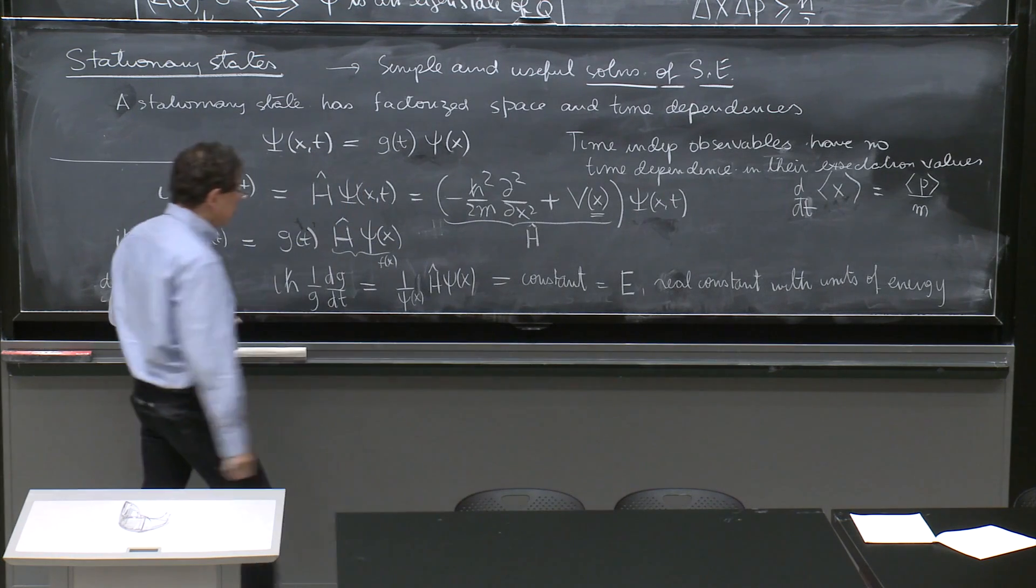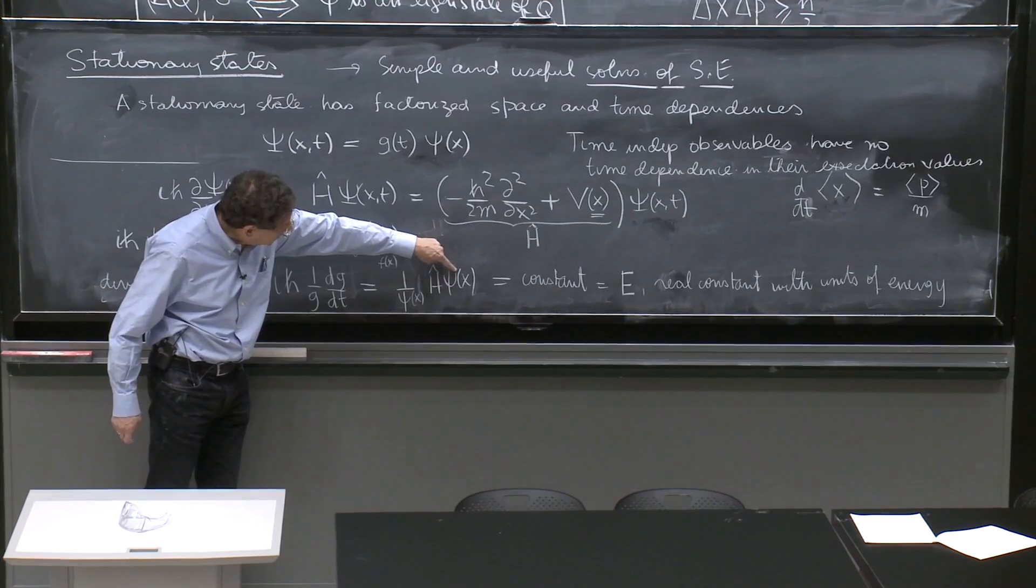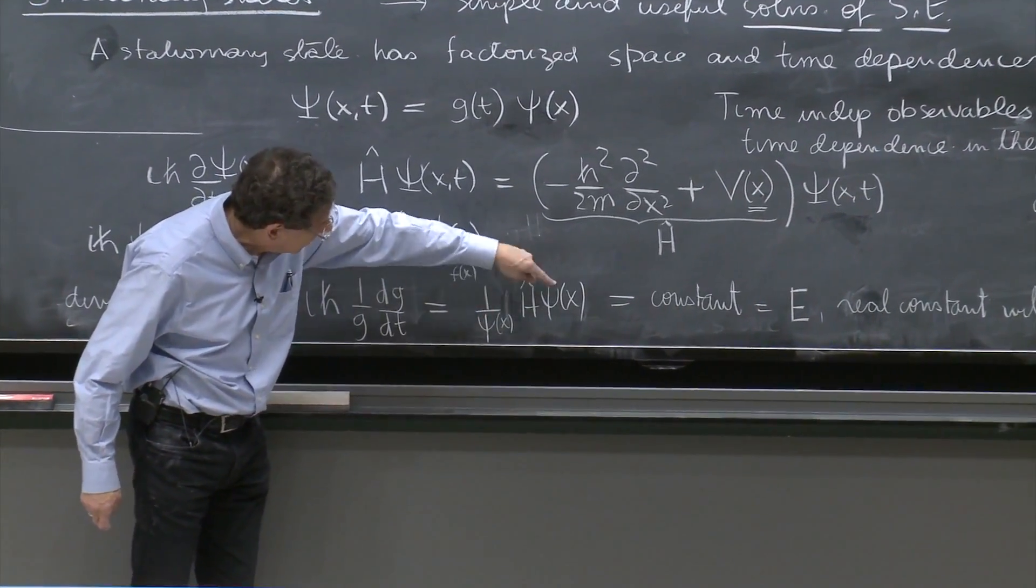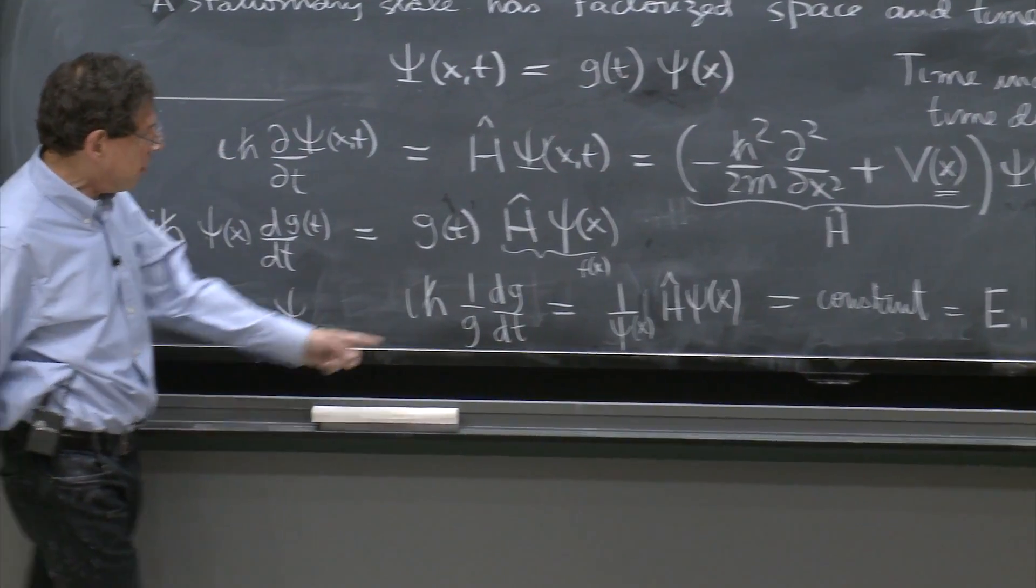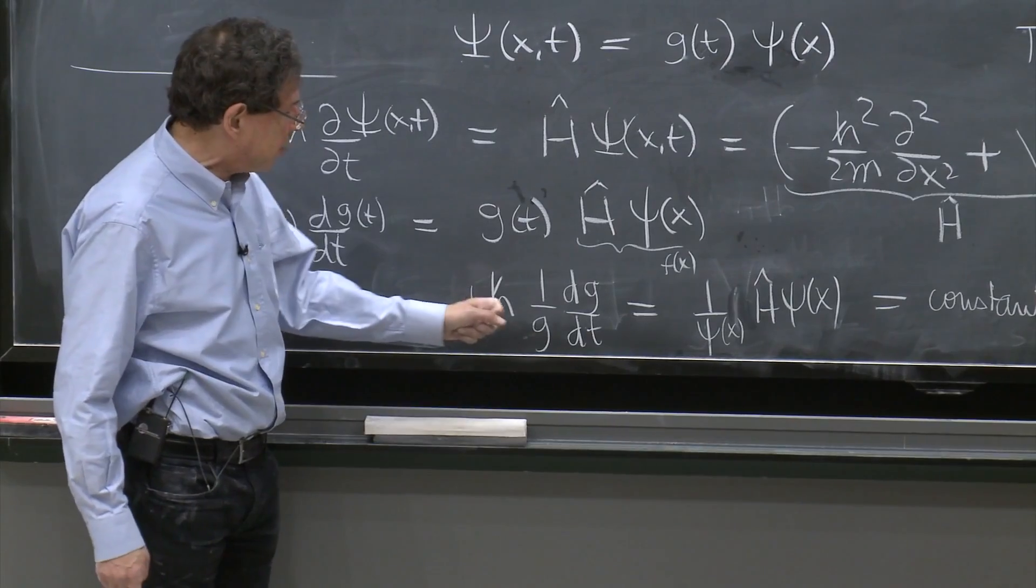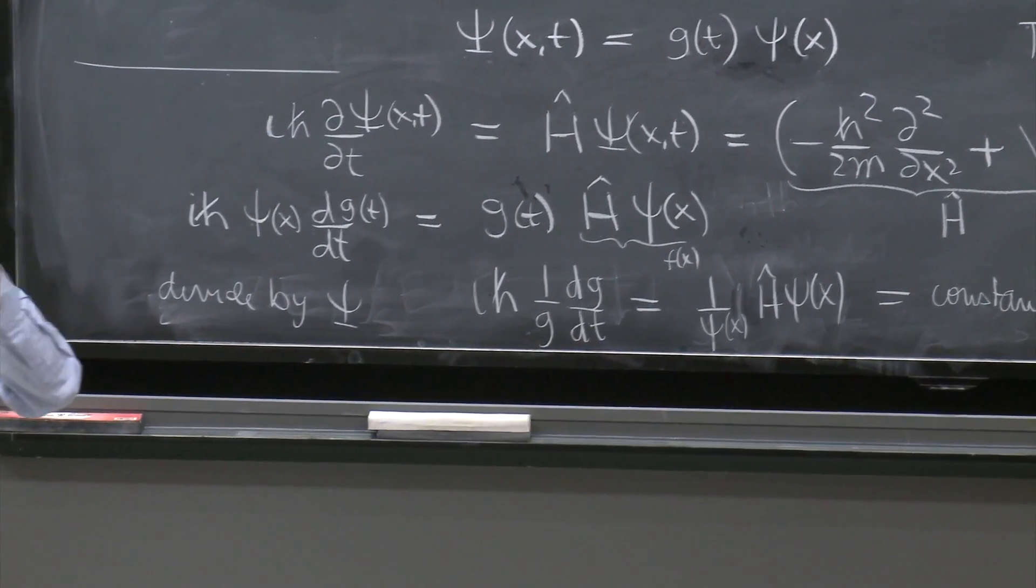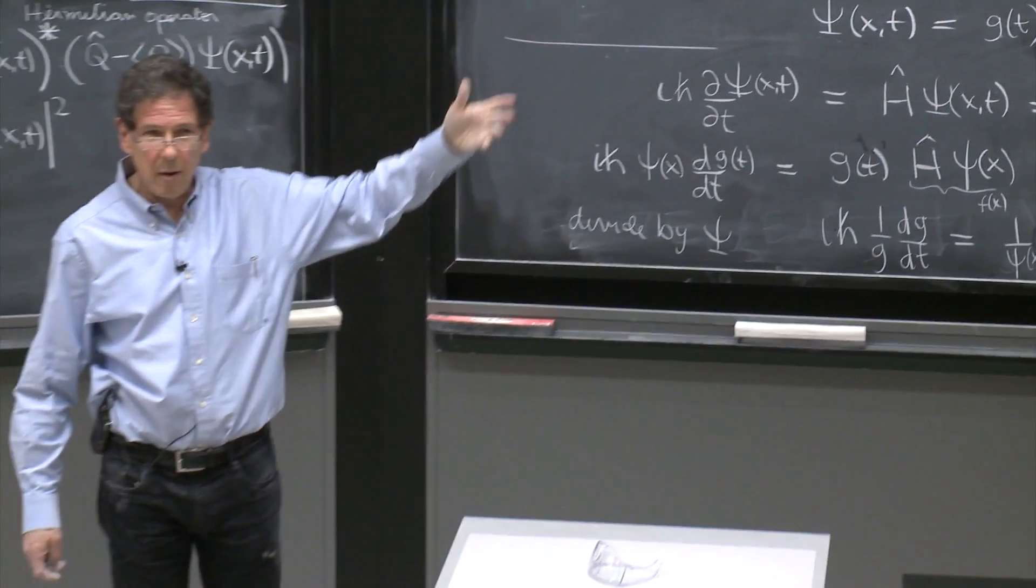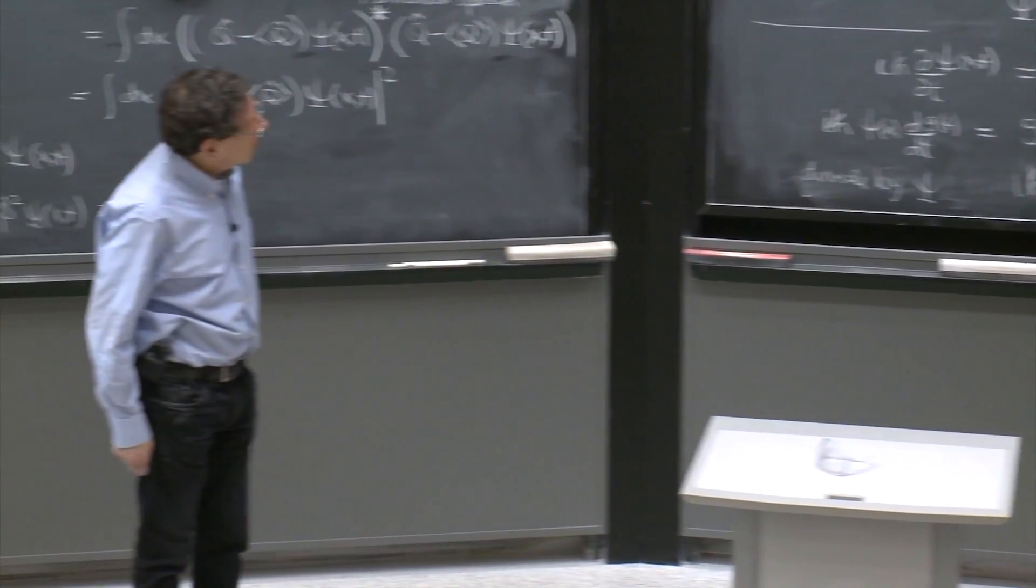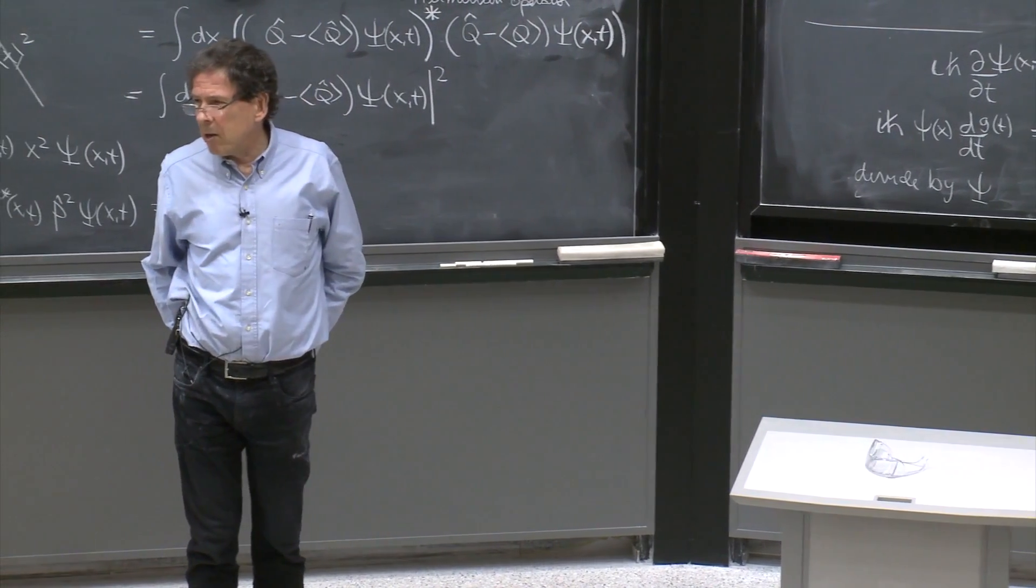And this E has units of energy. You can see the units because the Hamiltonian has units of energy, and whatever units psi has, they cancel.